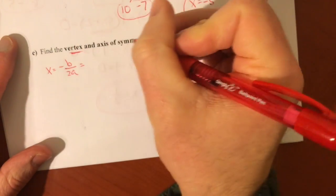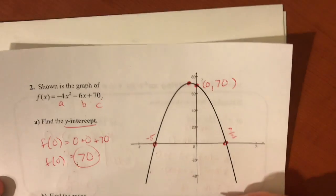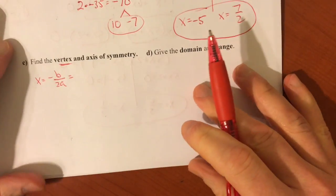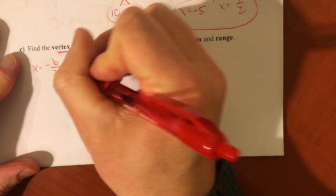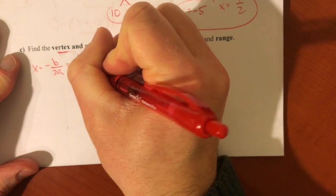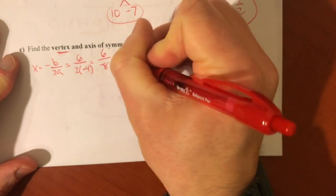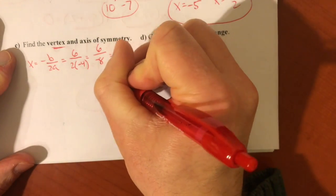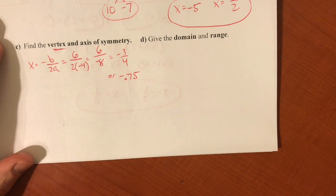So for this original parabola, a, b, c are negative 4, negative 6, and 70. So negative b over 2a. So negative b is going to be negative negative 6, or positive 6, over 2 times a, which is negative 4. And we're going to have 6 over negative 8, which is negative 3 fourths. Or if you want to use a decimal, negative 0.75.